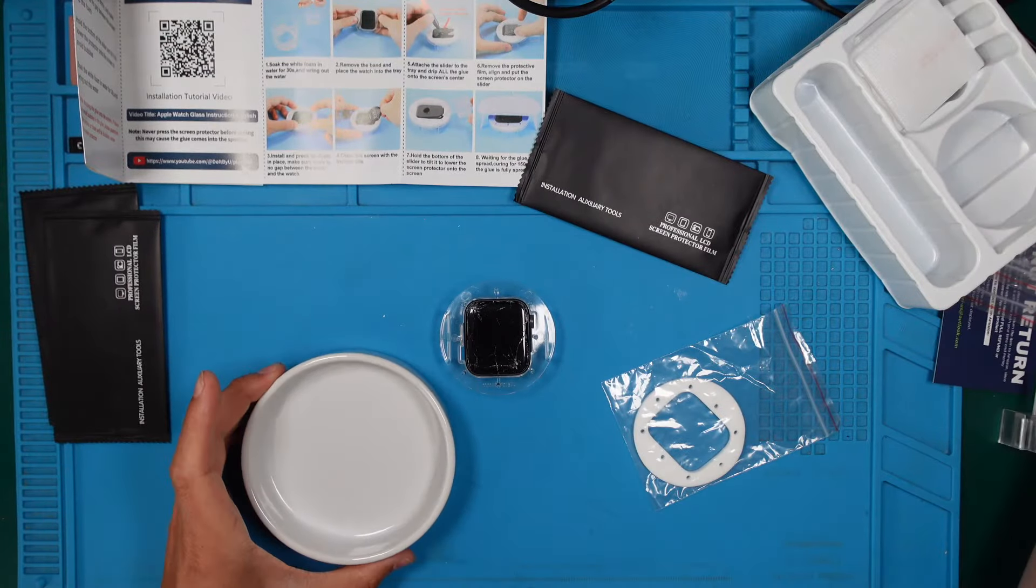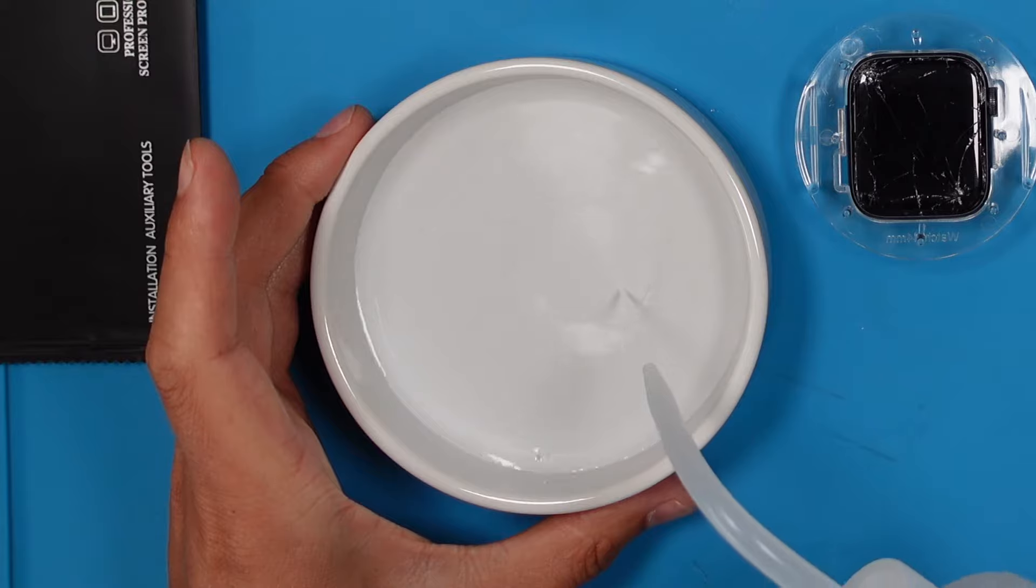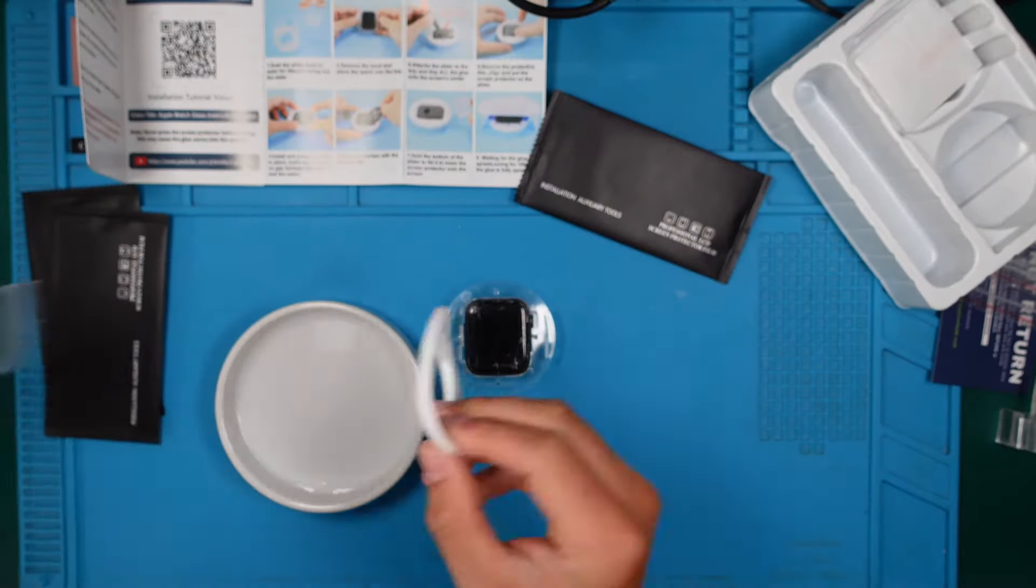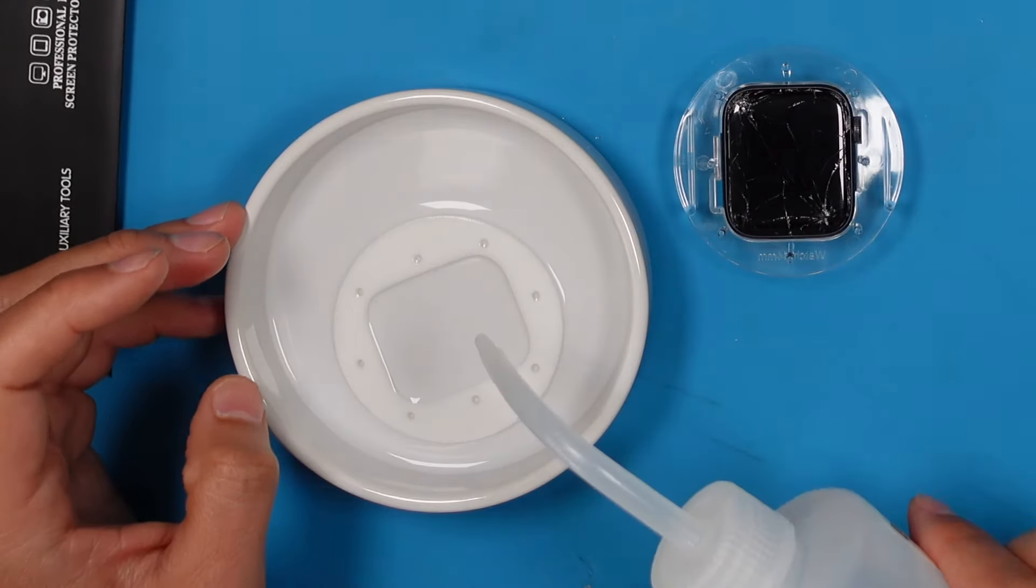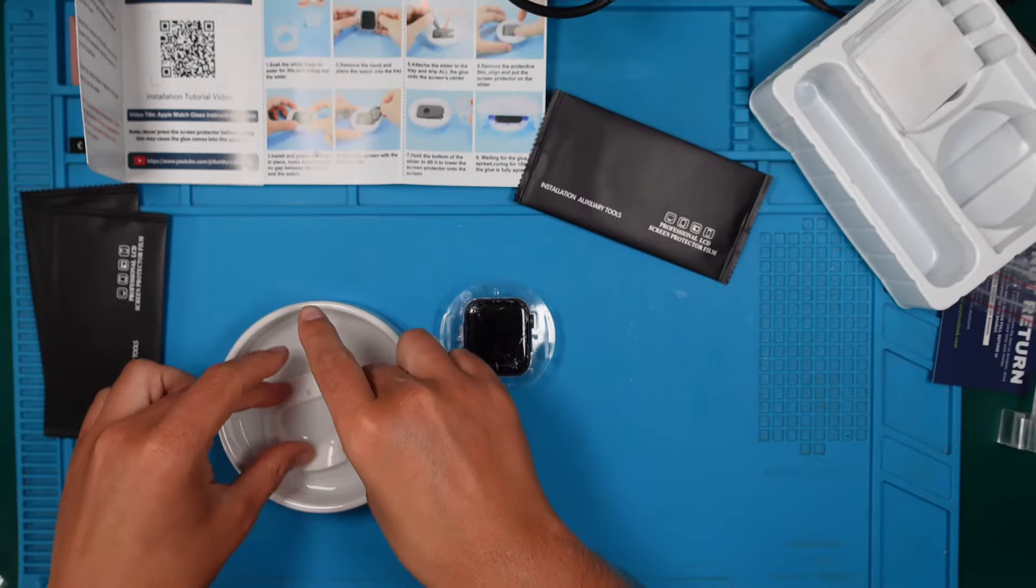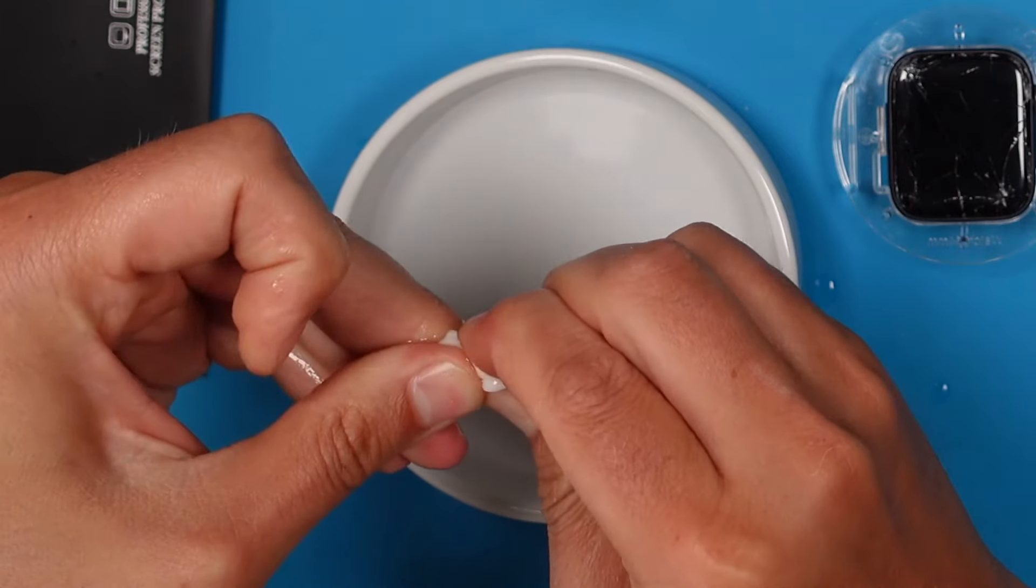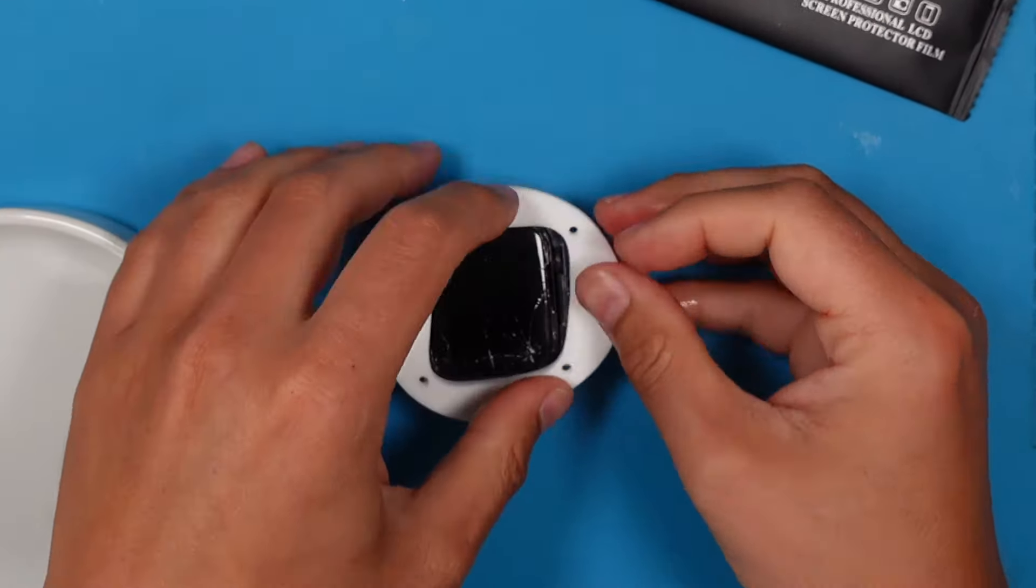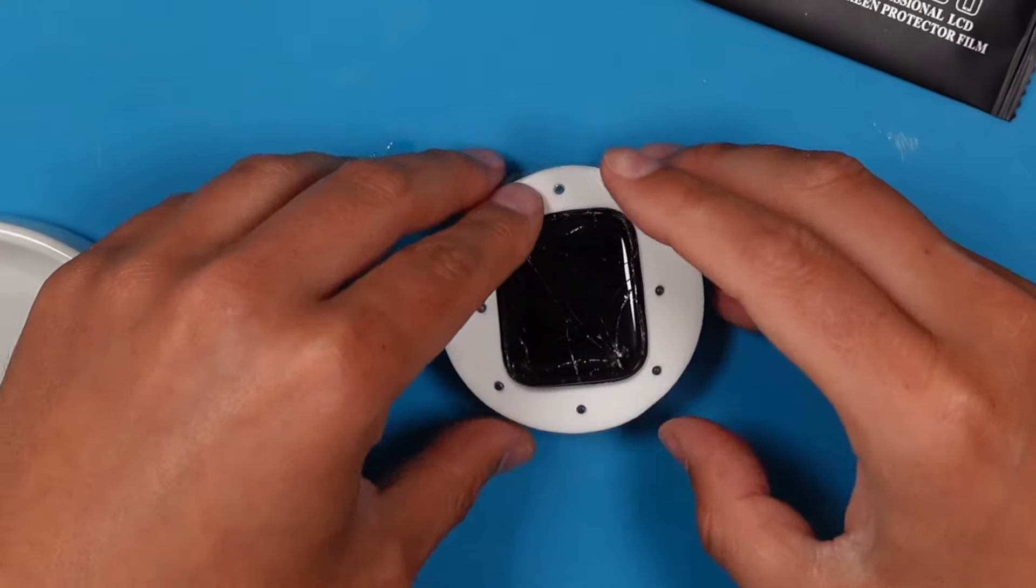Now we do need some water. I just have here some distilled water. You can use normal tap water, doesn't matter. Let's use this here. We will let it soak. Directions say 30 seconds. This here will prevent the glue from getting to areas where we don't want the glue to be. Already enough. Now we just wring it out. And now we put this here, all these plastic stands. Like so.